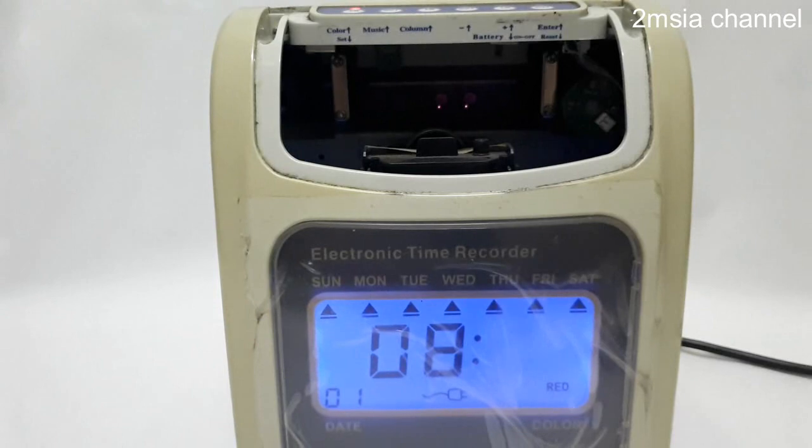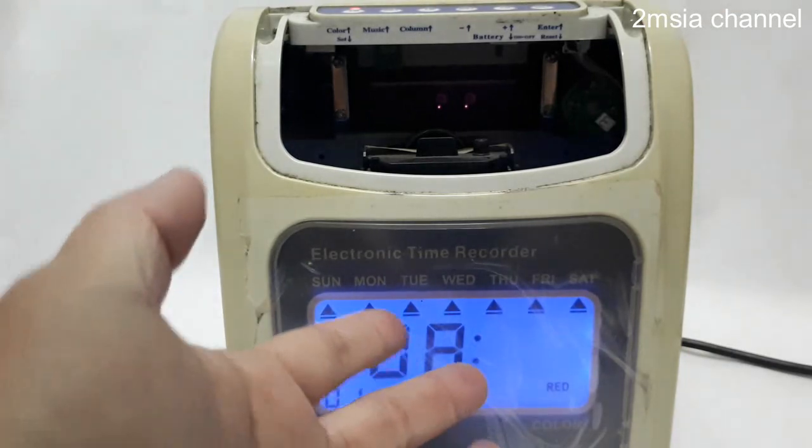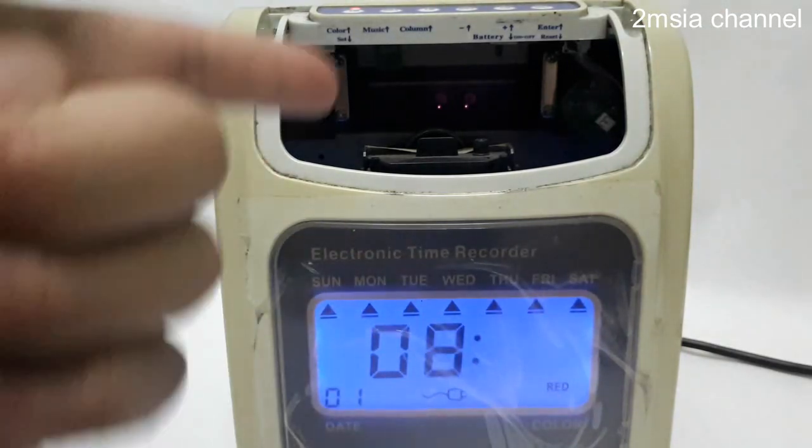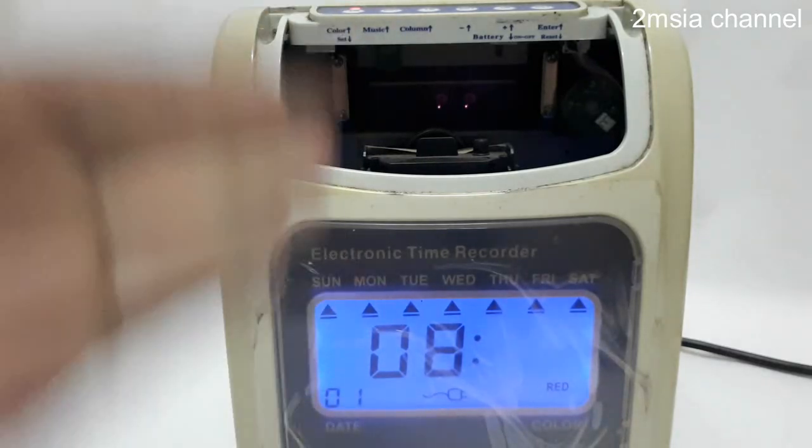So you enter, then you can choose the minute you want. It will be red color. For example, I set 8 o'clock. When it hits 8 exactly, the time will become red color. After you're done, you press enter.